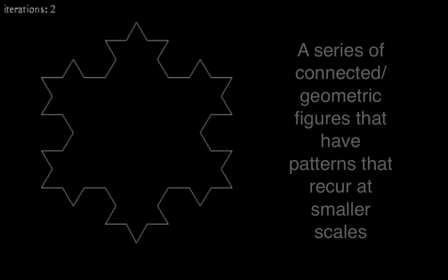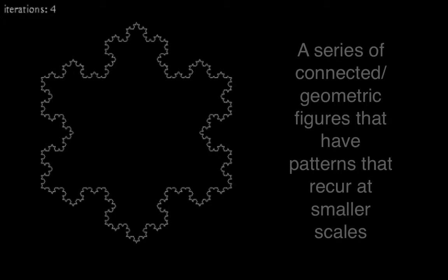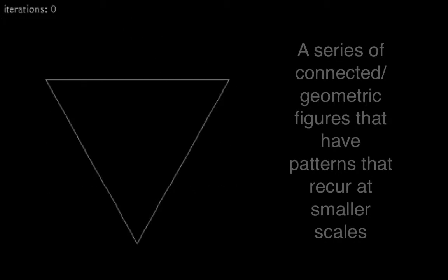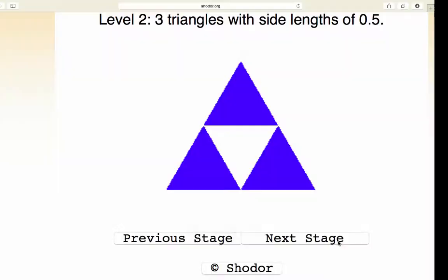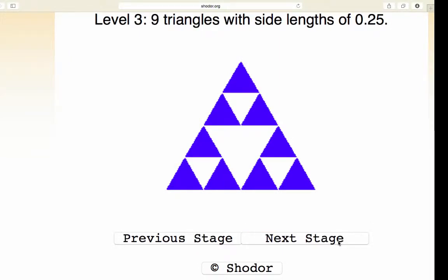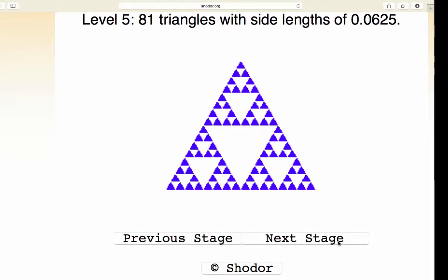For our inquiry, we defined geometric fractals as a series of connected segments or geometric figures that have patterns that recur at smaller scales. For example, we focused on the Sierpinski triangle, a geometric fractal that follows a specific pattern of inserting an inverted triangle within every upright triangle, and repeating this process through each generation.